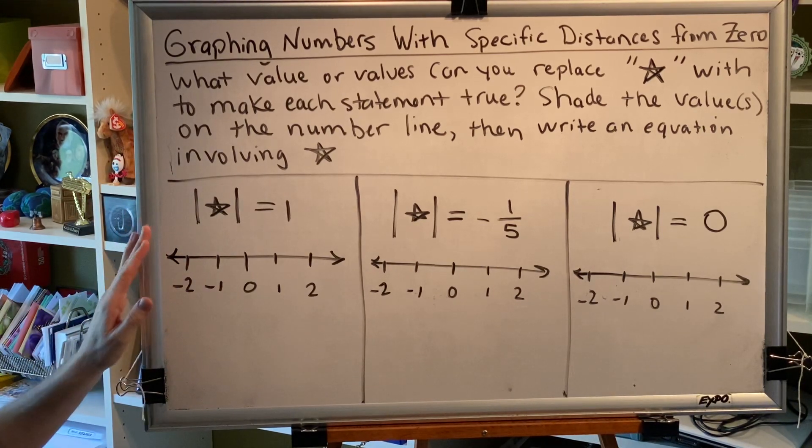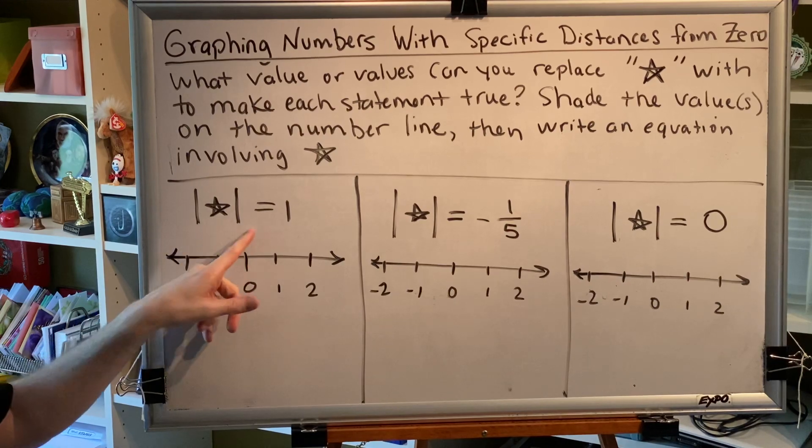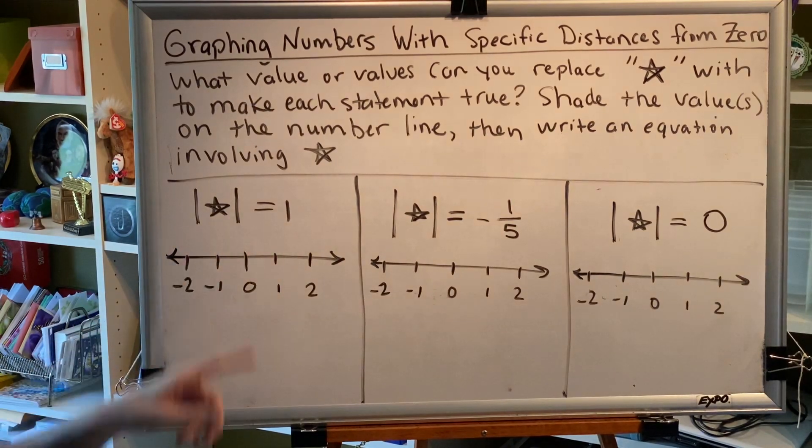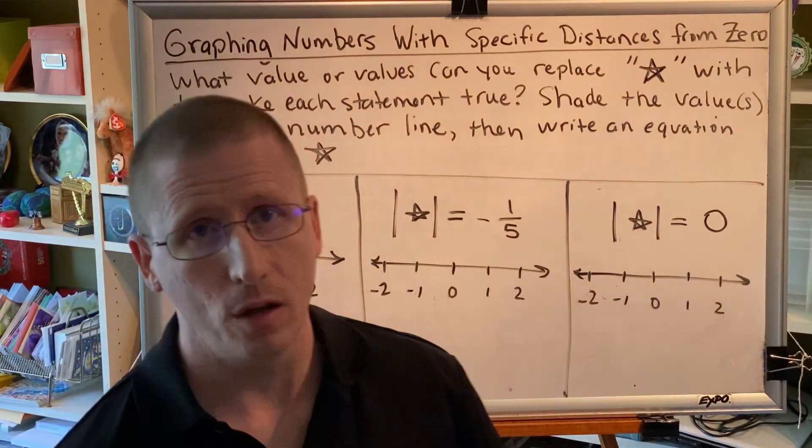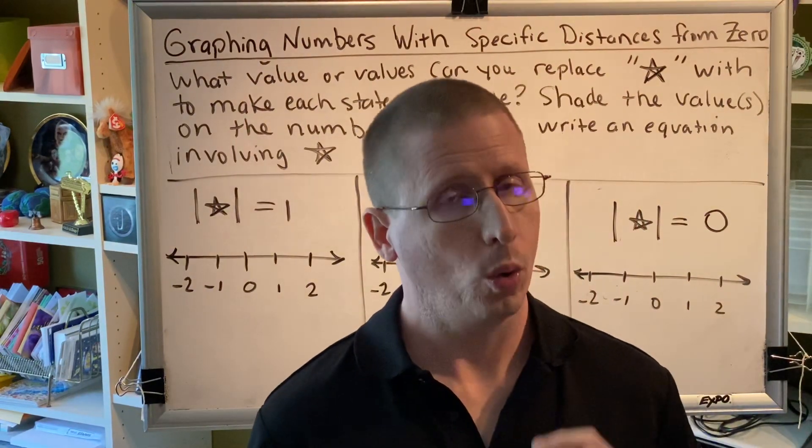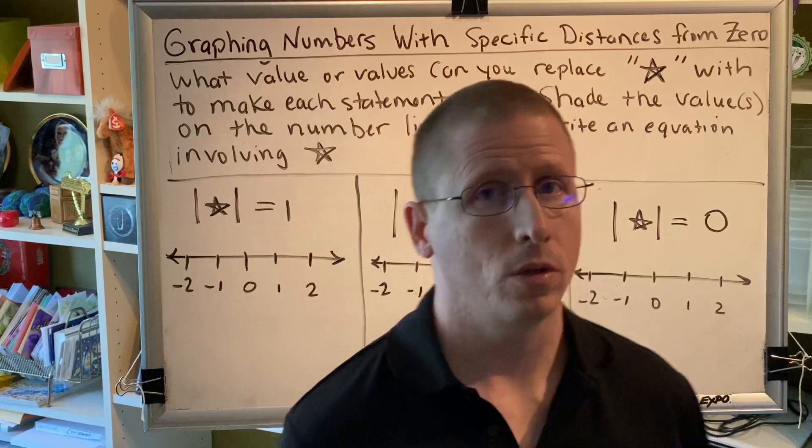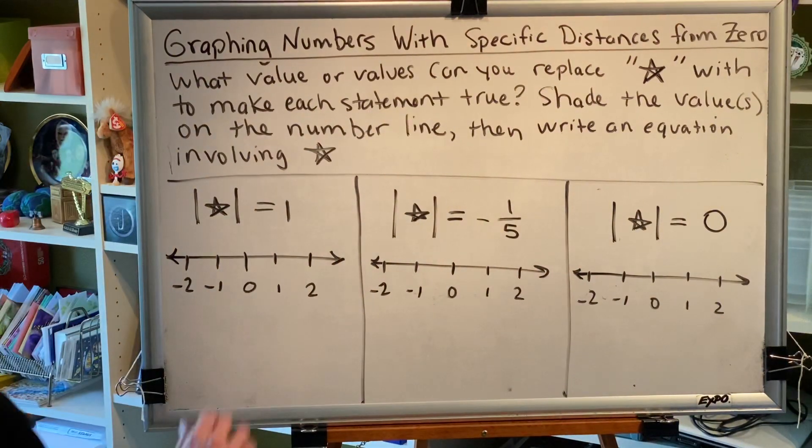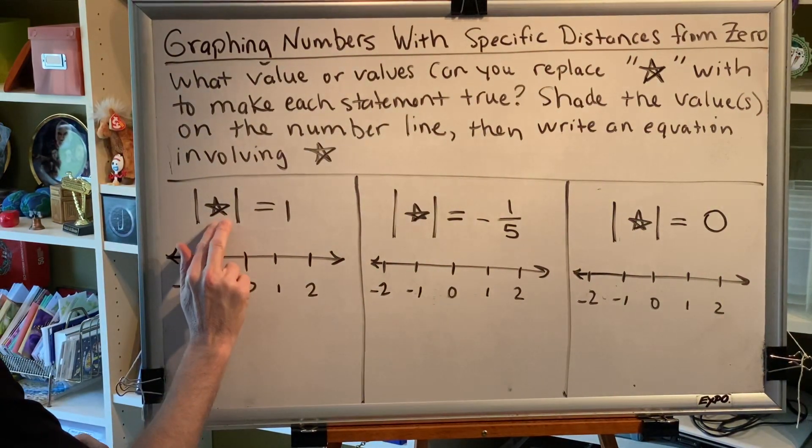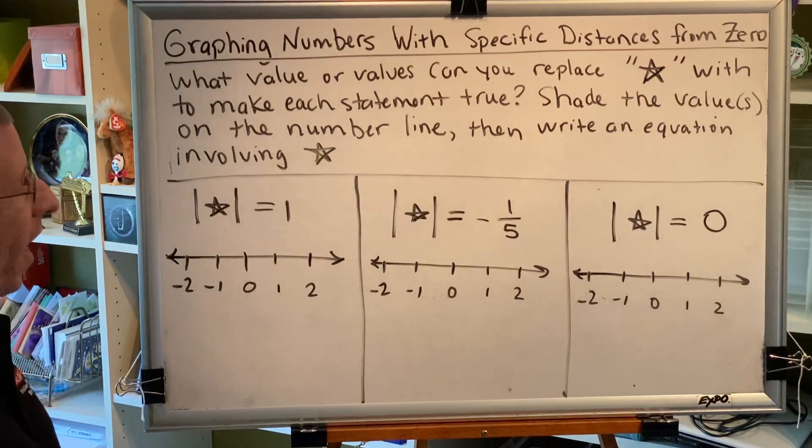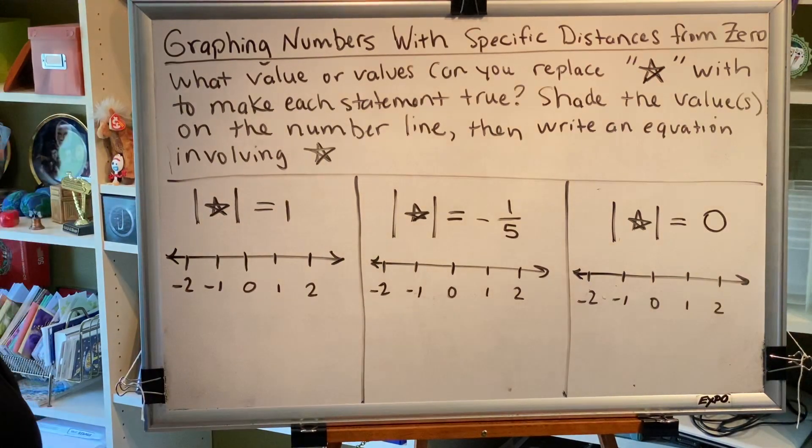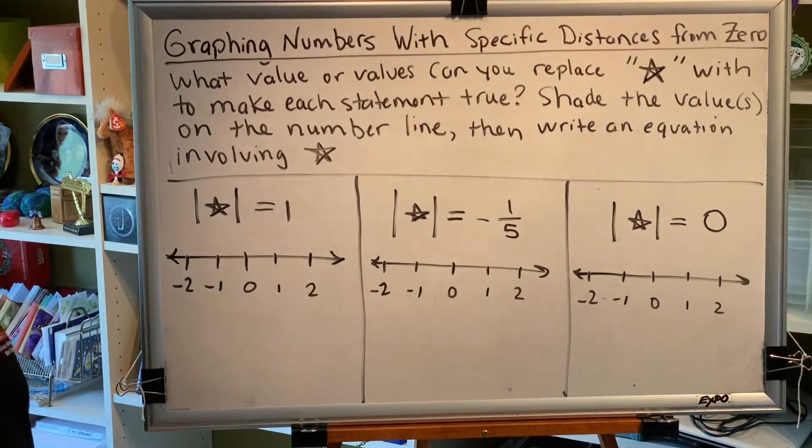Alright, let's look at our first problem. The absolute value of star equals 1. We know that absolute value takes something negative and makes it positive, or takes something positive or zero and leaves it alone. What kind of number can we put inside these absolute value bars in place of the star so that when we take the absolute value, we get the result 1?